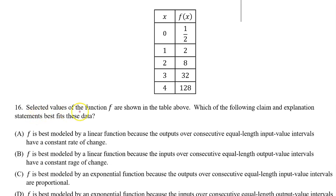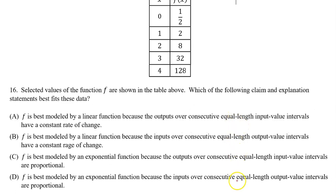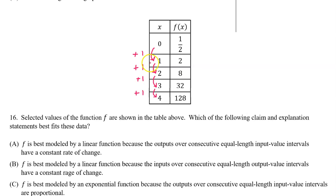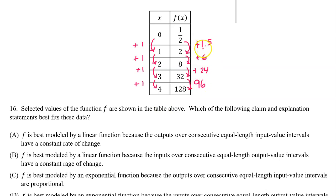Number 16. Selected values of the function f are shown in the table above. Which of the following claim and explanation statements best fits these data? The answer choices mention either equal length input value intervals or equal length output value intervals. Let's investigate the length of the input value intervals. The input values are increasing by one, so we do have equal length input value intervals. The output values do not show a constant rate of change. So the answer cannot be A, because A says that f is linear because output values have a constant rate of change over equal length input value intervals. We do not see a constant rate of change, so the answer is not A.